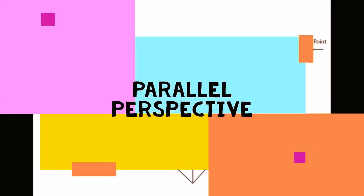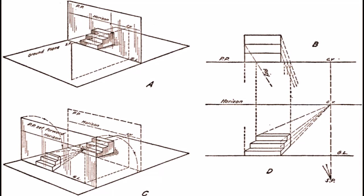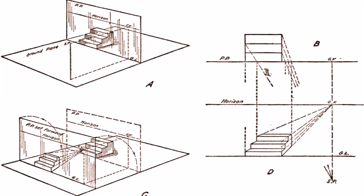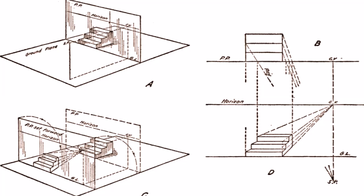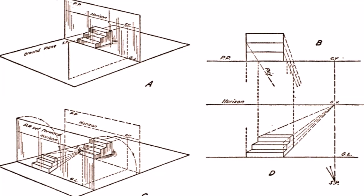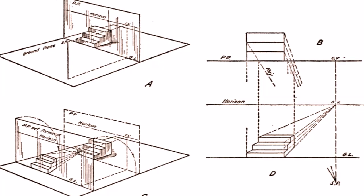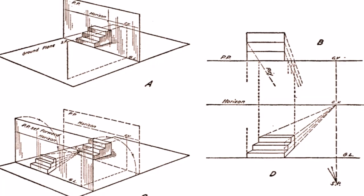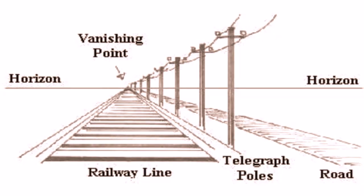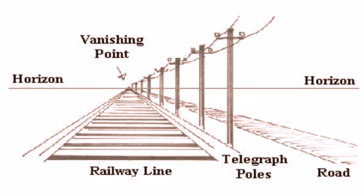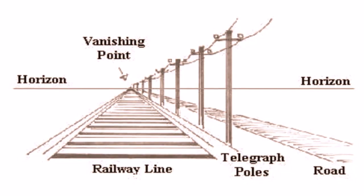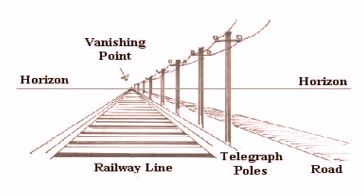Parallel perspective is a type of linear perspective. All categories of linear perspective include a horizon line and a stationary point, the position of the observer. In one-point perspective, only one vanishing point exists, lines radiate outwardly from this point, and perpendicular lines meet at this point. Parallel perspective is the same as one-point perspective.